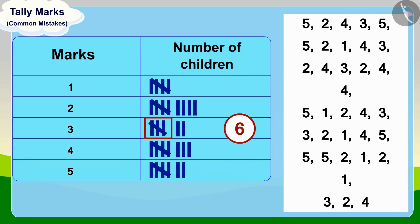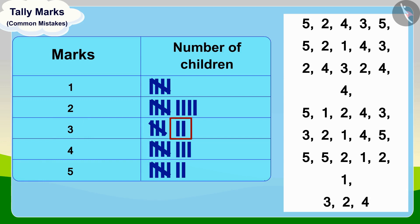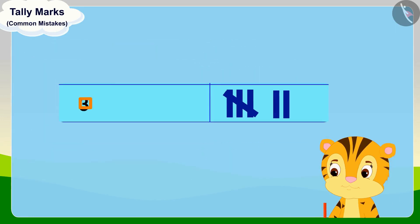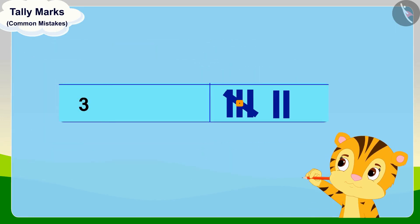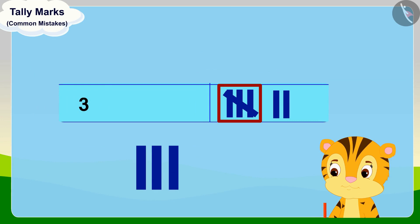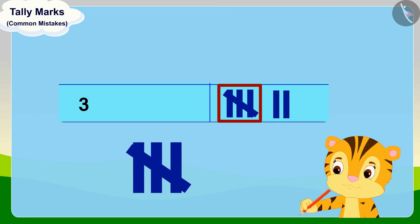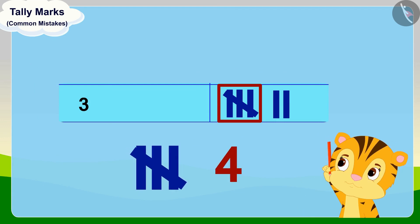And how many tally marks should there be for three marks? Yes, one group of tally marks and one line. But what's this? Mrs. Khan has made one group of tally marks and two lines for three marks. Actually, when Mrs. Khan was making tally marks for three marks, she made only three vertical lines and one slanted line in the group of tally marks, leaving only four lines in that group.